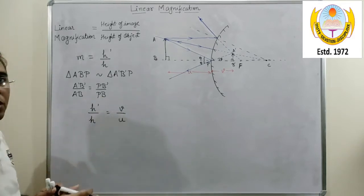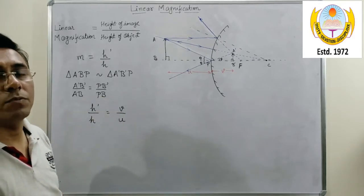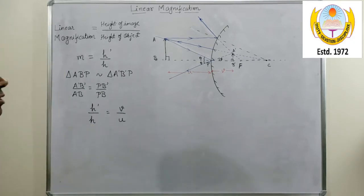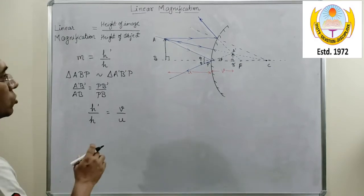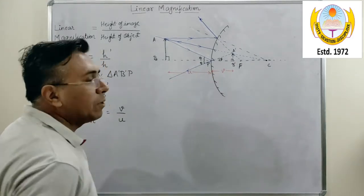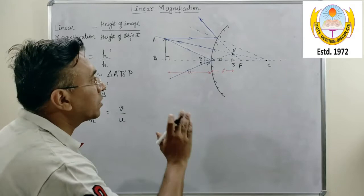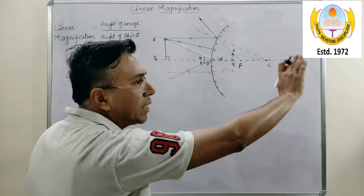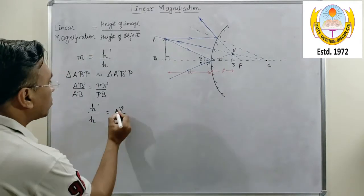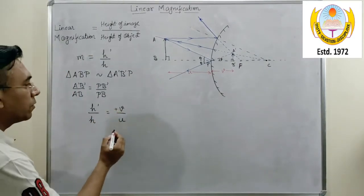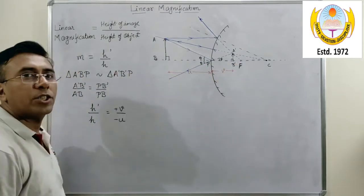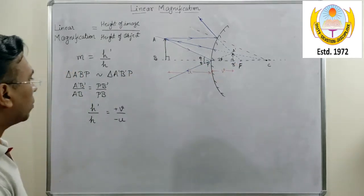But this expression is incomplete without a proper sign convention. So what we need to do over here is we need to do the sign convention. So V over here will be positive since we are measuring the distance V in the direction of the incident light. U will be negative because in order to measure U we have to go opposite to the direction of the incident ray.